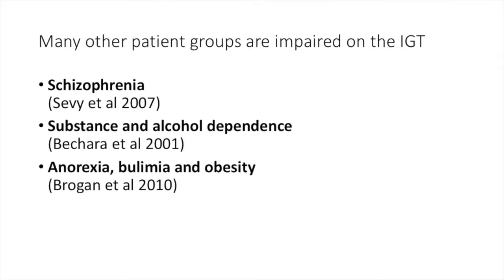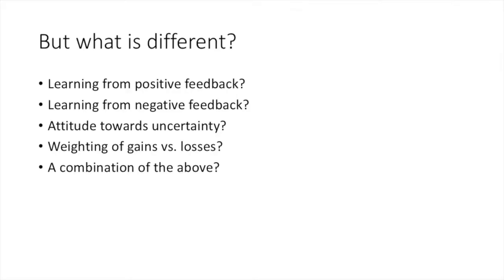For example, individuals with schizophrenia, substance and alcohol dependency, and eating disorders all show impairment. So the Iowa gambling task is very powerful and robust in showing that something is different or varied in a lot of populations. But what exactly is different — that's difficult to say using this task alone.